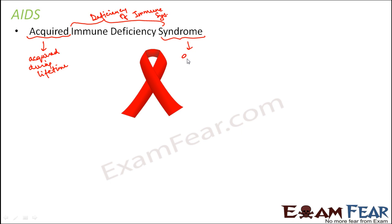'Syndrome' refers to a group of symptoms. If the immune system itself becomes weak, even small pathogens attack the body with nobody to protect it — like having no security guards at your house, even a small thief can steal. Due to the deficiency of the immune system, the body cannot fight any infection and multiple symptoms arise, giving us AIDS: Acquired Immunodeficiency Syndrome.